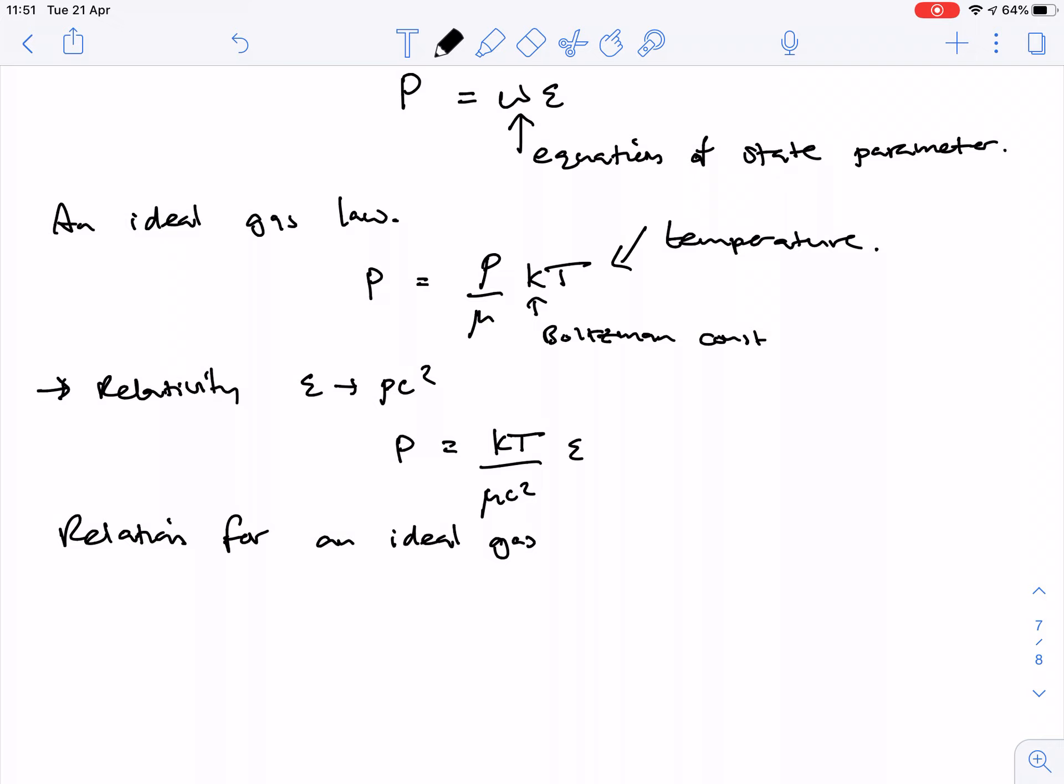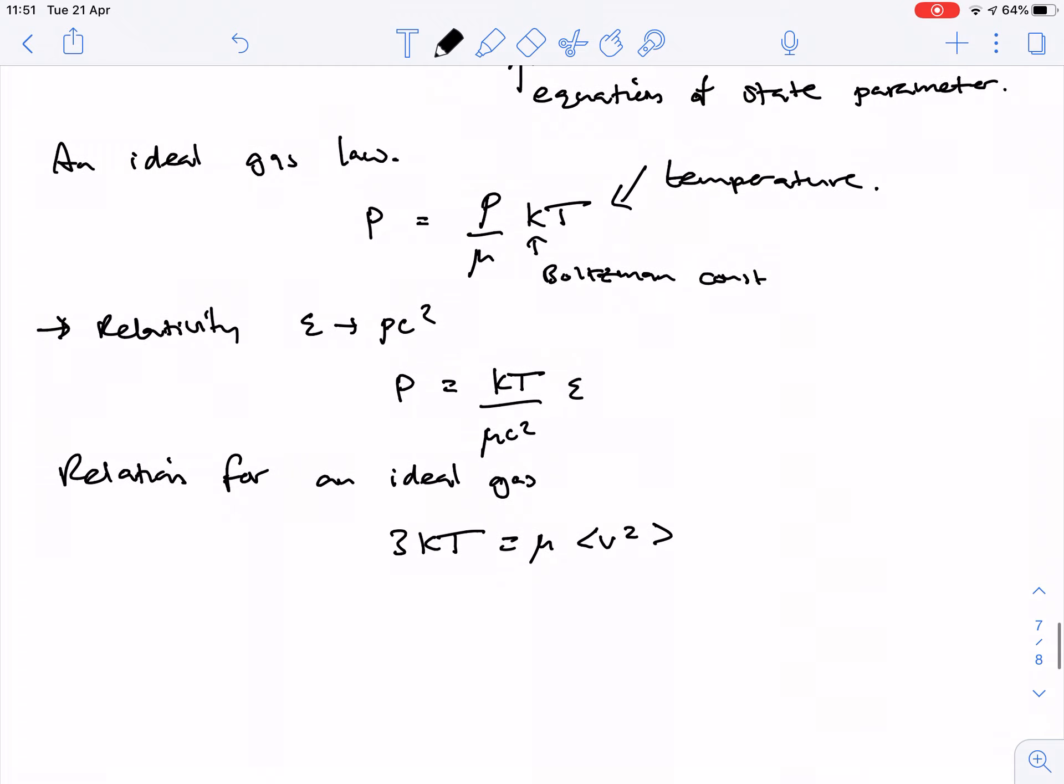So that three kt, because you have three degrees of freedom in a gas, right, it can go x, y, z, is just mu v squared, where this v squared in brackets is basically a root mean velocity. So each particle has a separate velocity, they're all whizzing around at different velocities, but this is a sort of average velocity that you're measuring.